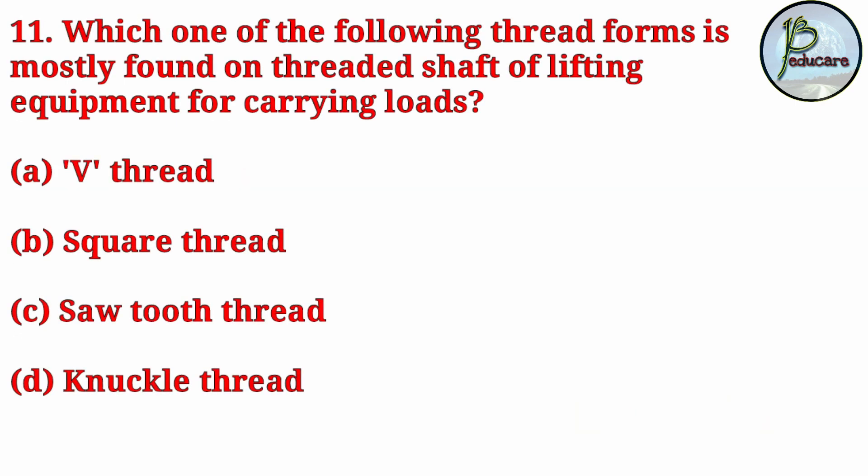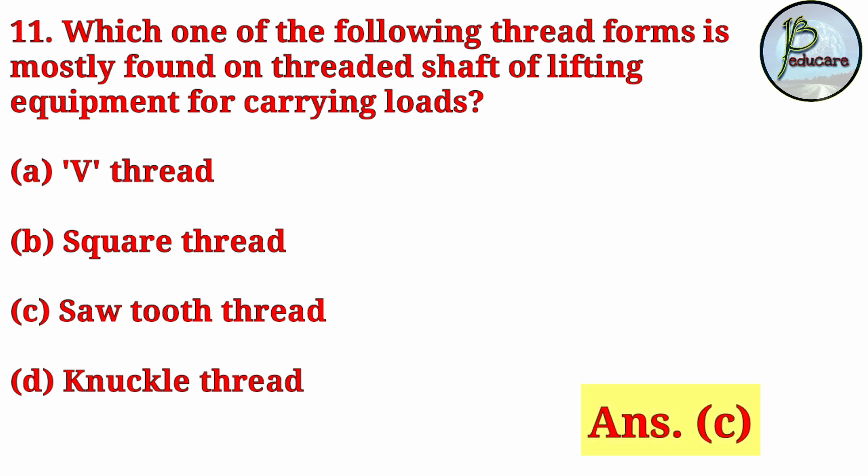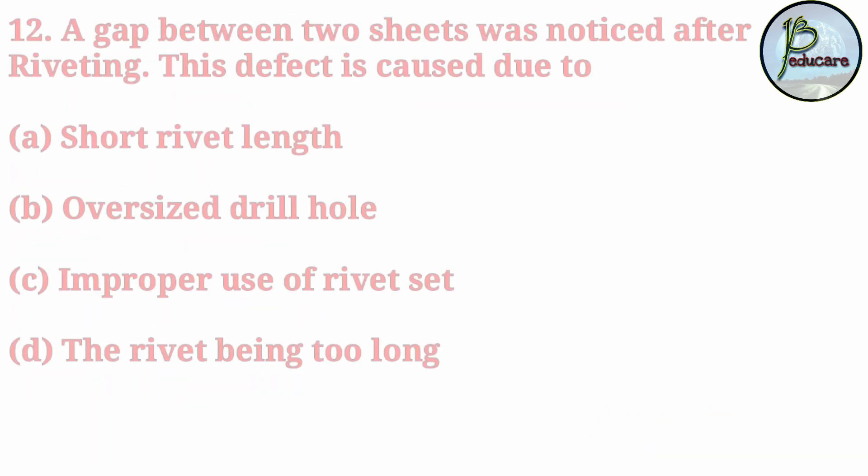Next question: which one of the following thread forms is mostly found on the threaded shaft of lifting equipment for carrying loads? The correct answer is option C: saw-tooth thread.